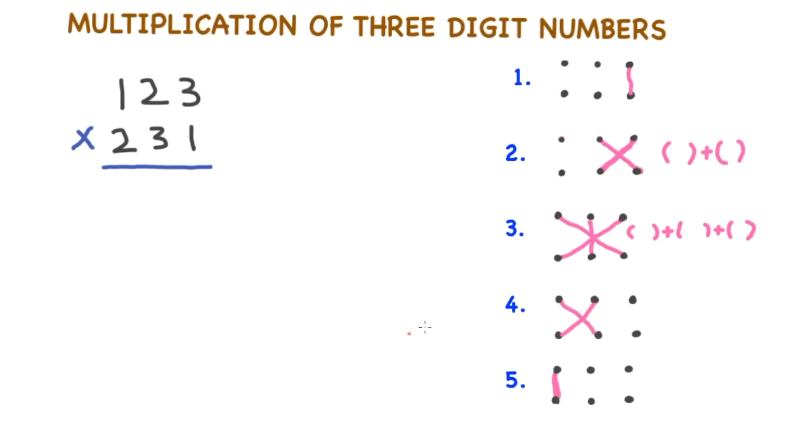Multiplication of three digit numbers. This is step 1. In step 1, we'll multiply these two digits. 3 into 1 is 3. I'll write that number here.